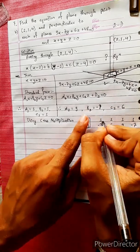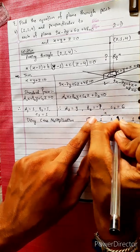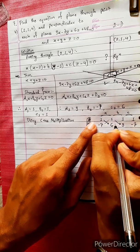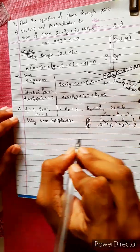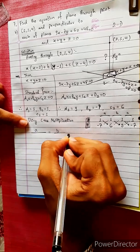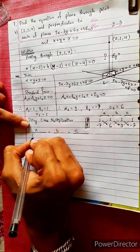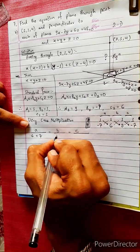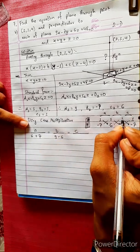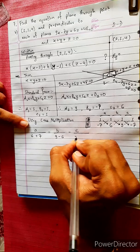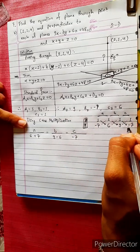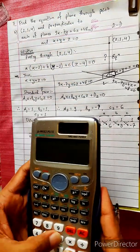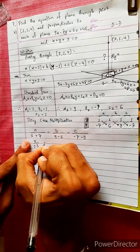Computing: 1 times 6 minus 1 times minus 7 gives 6 plus 7 equals 13. Then: 1 times 9 minus 1 times 6 gives minus 16. Using the formula: a divided by 13 equals b divided by minus 16 equals c divided by...